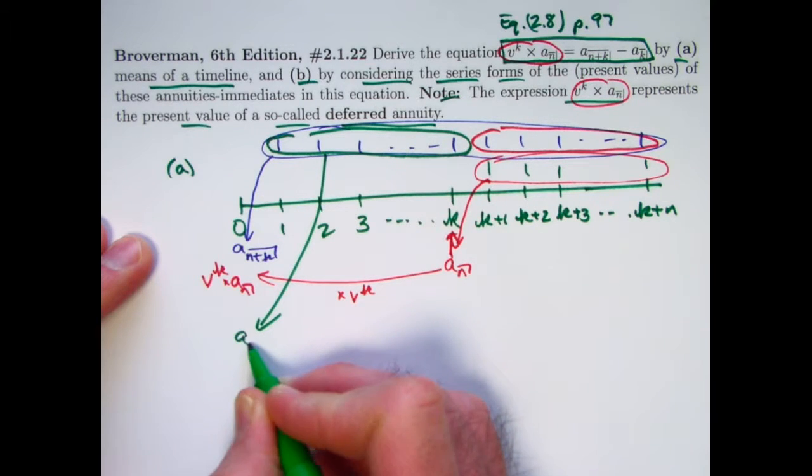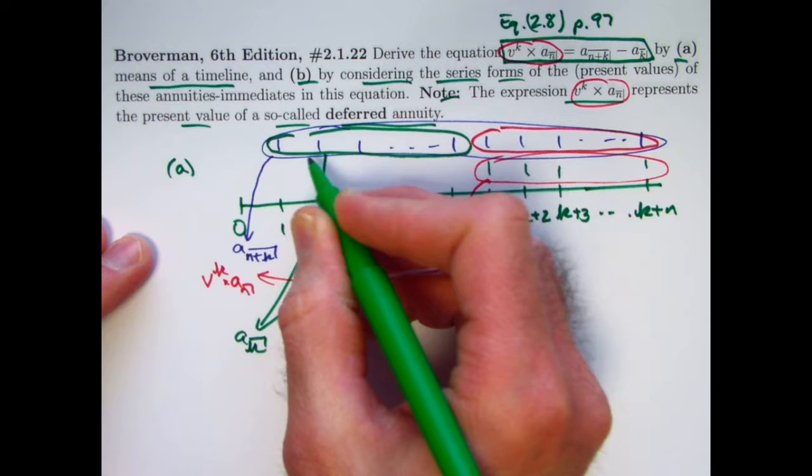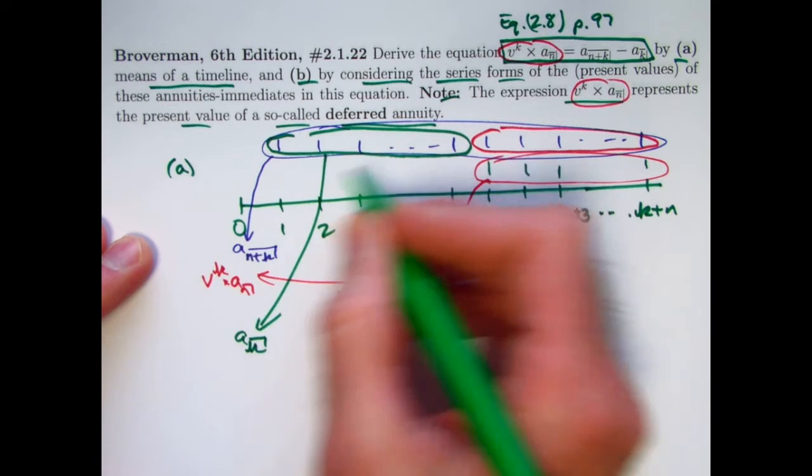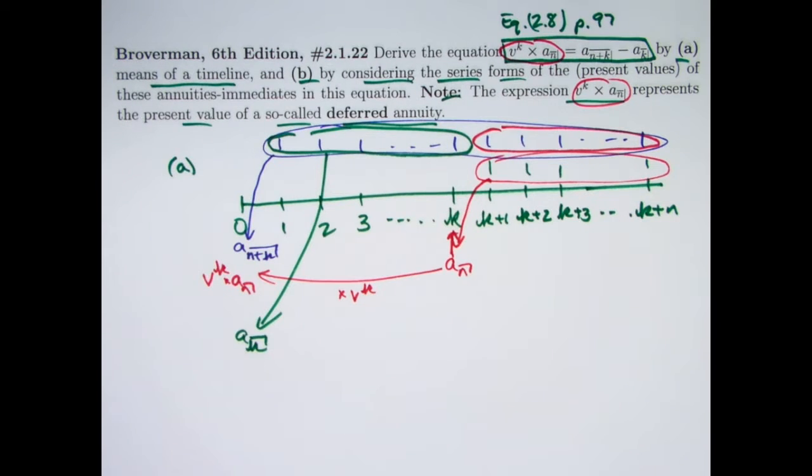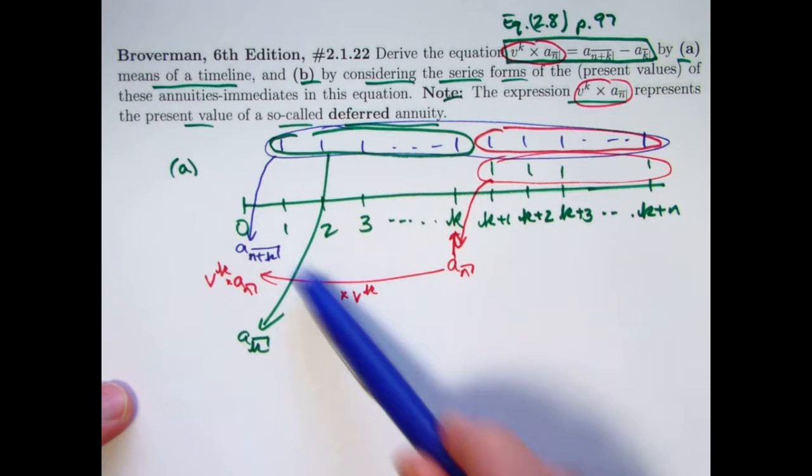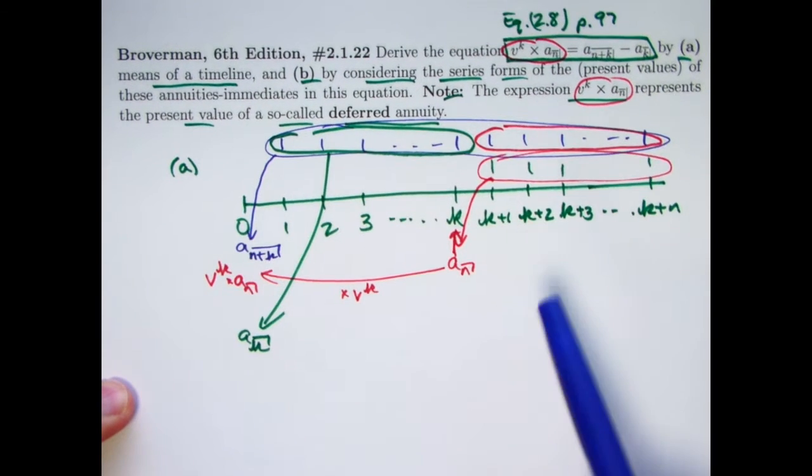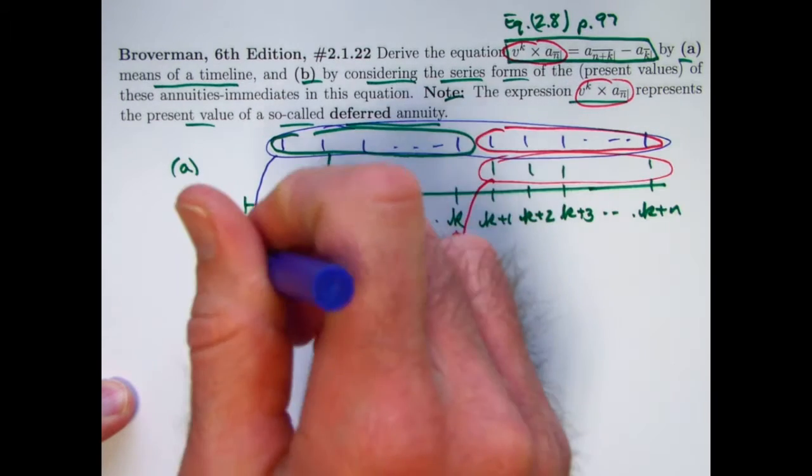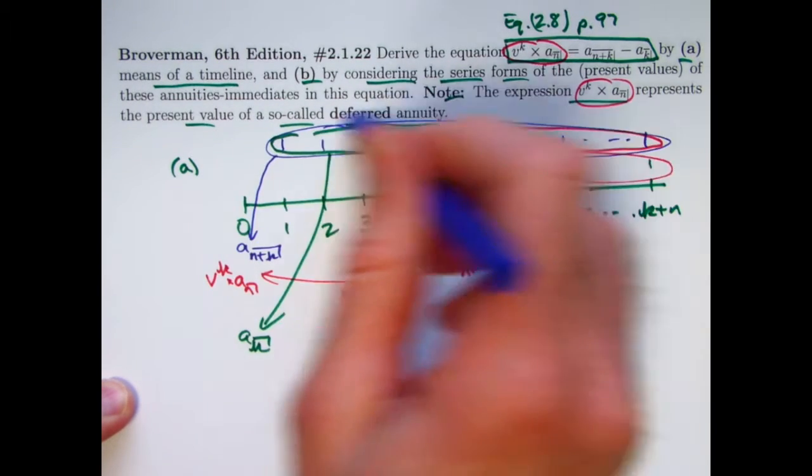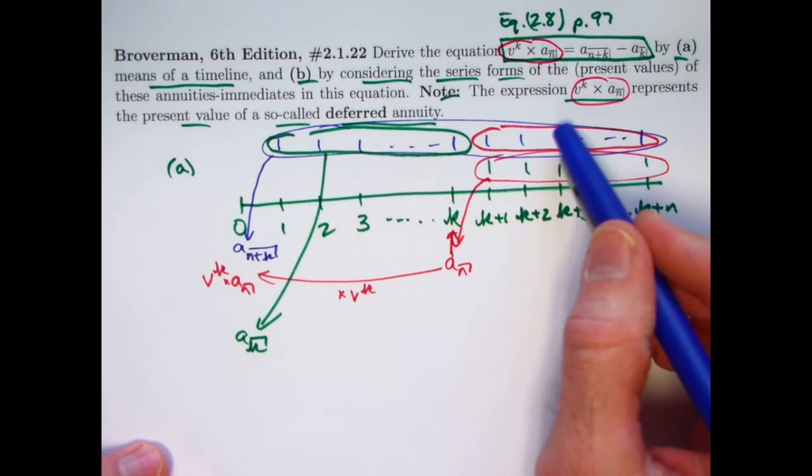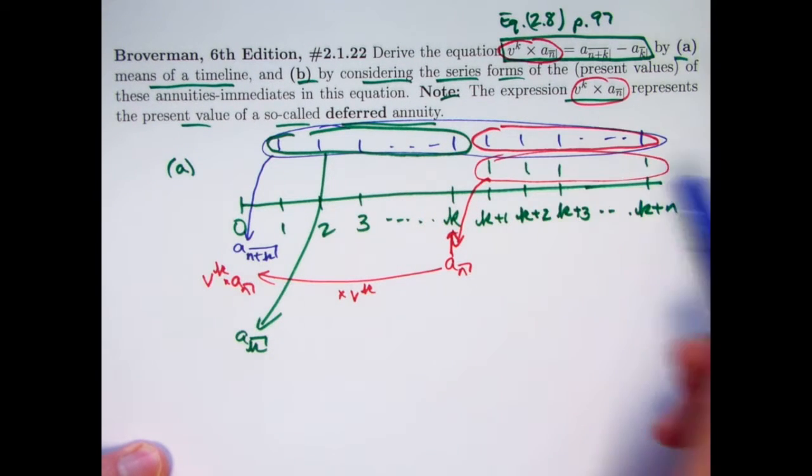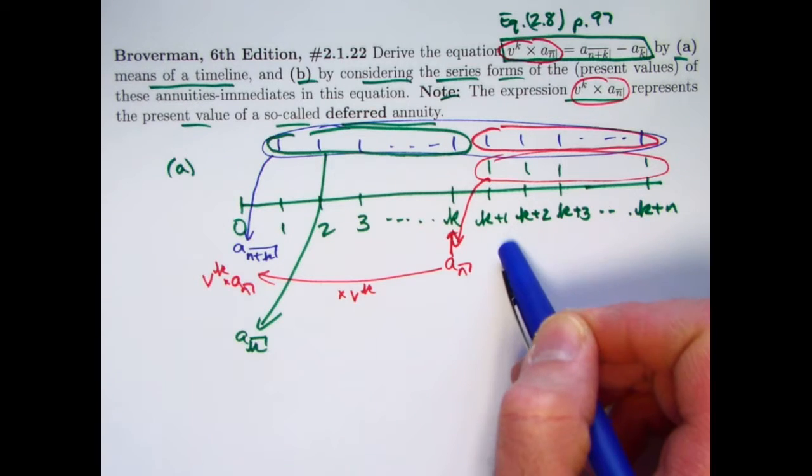You might wonder whether you're really thinking of it right, but it is correct. The present value of the first K payments at time zero would be A_K. So if I take what's in blue here, this present value for all K plus N payments, and subtract off the present value of the first K payments, obviously that's going to give you the present value of the last N payments that start at time K plus one.